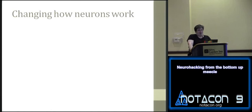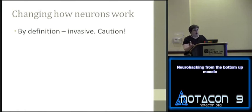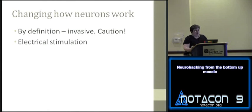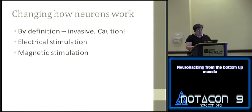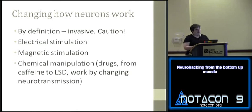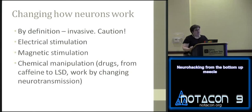Now the third portion of neurohacking: changing how neurons work, either through disruption or other methods. This is by definition invasive — if you're experimenting on yourself or a friend, use a lot of caution. There are three main ways people change how neurons work: electrical stimulation, magnetic stimulation, and chemical manipulation. Regarding chemicals — pretty much every drug you take affects neurons in some way, whether through neurotransmitters or the electrical properties of neurons, and there's a huge amount of literature on this.